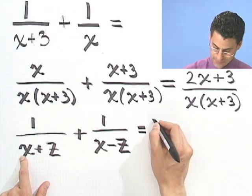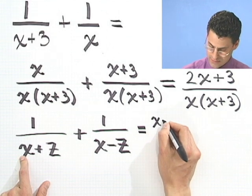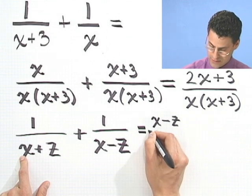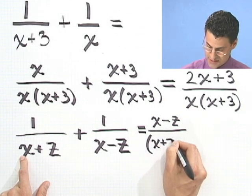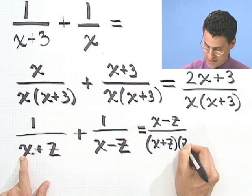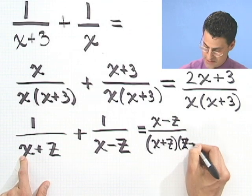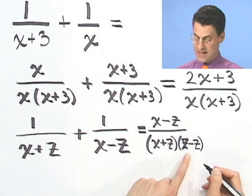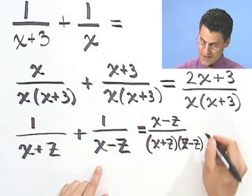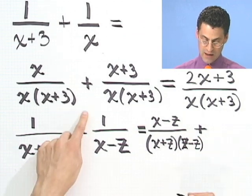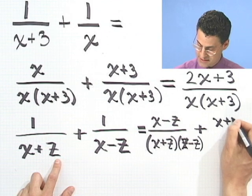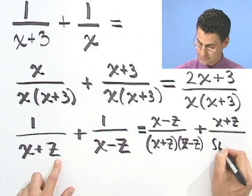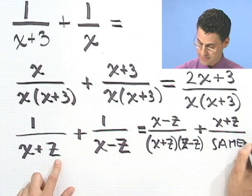So I'd see x minus z all divided by x plus z, x minus z. That's an x there. And then I add to it, when I get a common denominator here, I multiply top and bottom by x plus z, so I'd have x plus z over the same bottom.